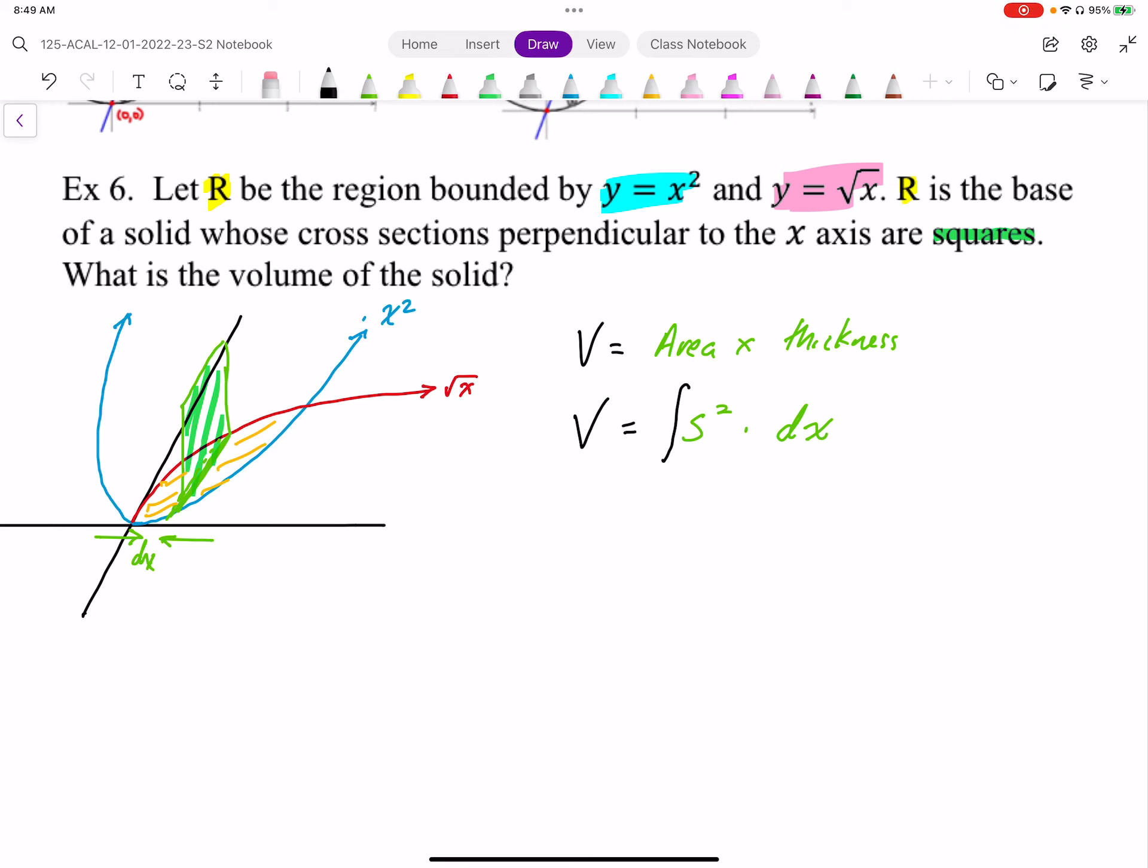So the s is going to be the side length, which is this green line here. So that's going to be our side length, s.